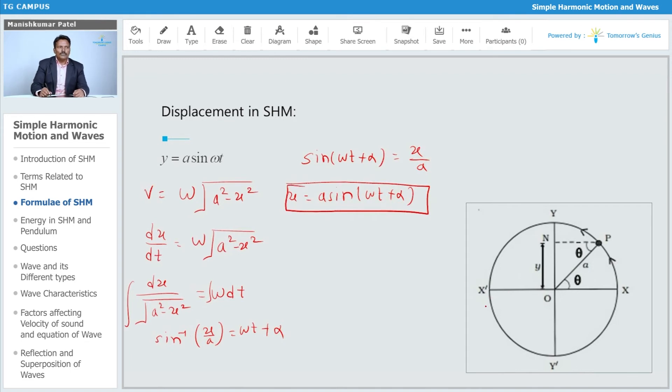So alpha, we know that. That is the initial phase shift or that is also epoch that we called. Theta is obviously the angular displacement, which is changing continuously with respect to time.